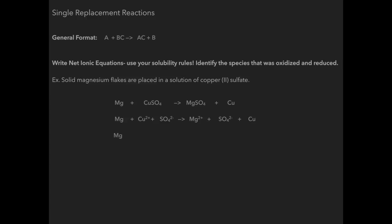And so what I end up with for my net ionic equation is Mg reacts with copper ion to produce magnesium ion and copper. So this is the reaction that's happening, this is why it's called an oxidation reduction reaction because if you notice magnesium is losing electrons to become Mg²⁺, which means magnesium is oxidized. Copper goes from a plus two to a zero charge, which means it gains electrons, which means it is being reduced.